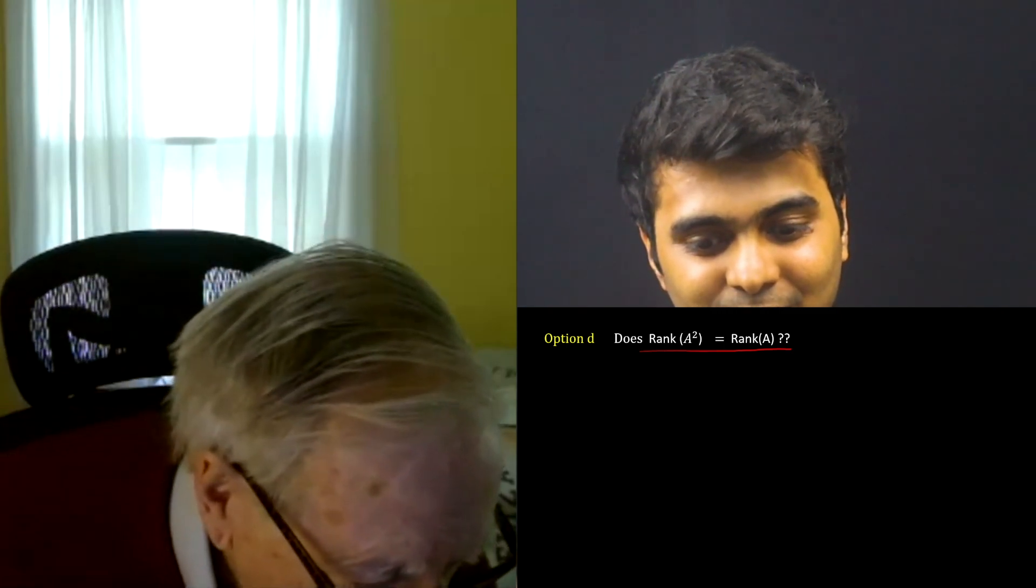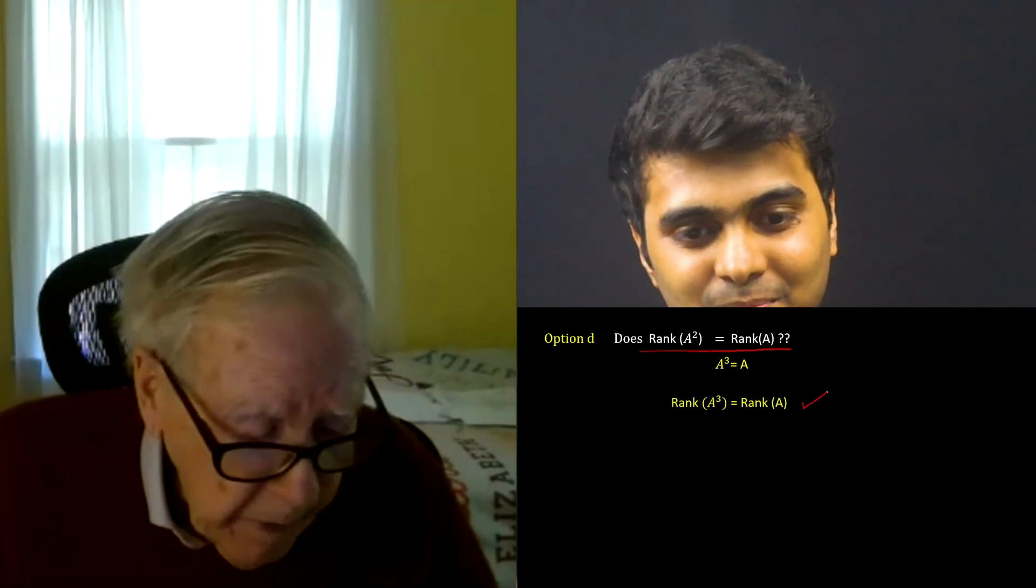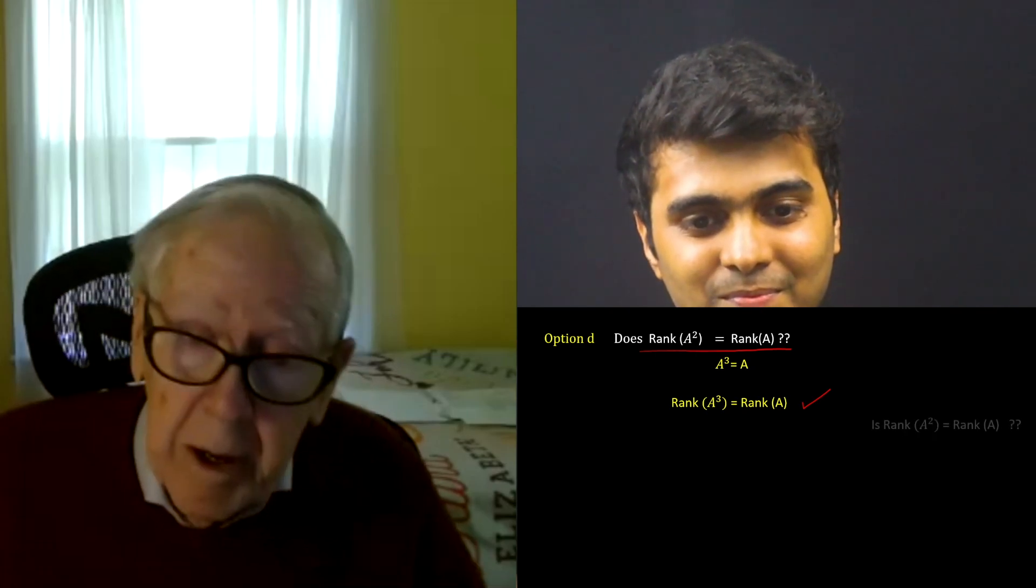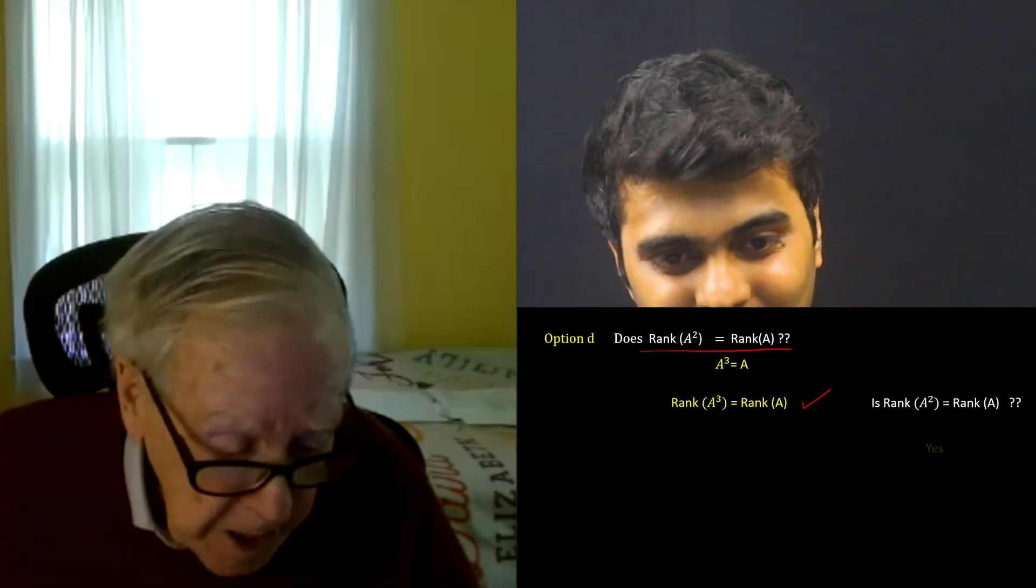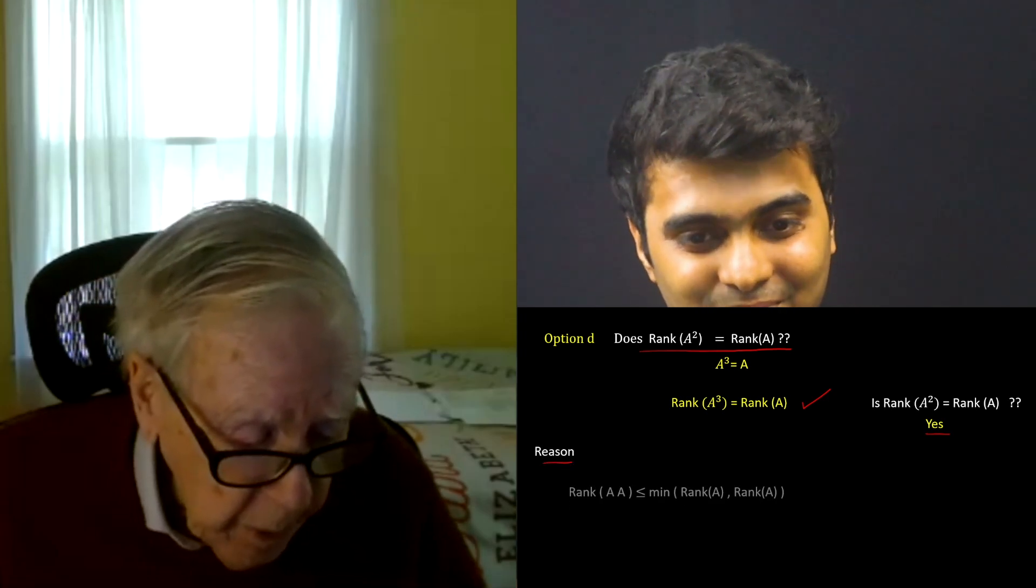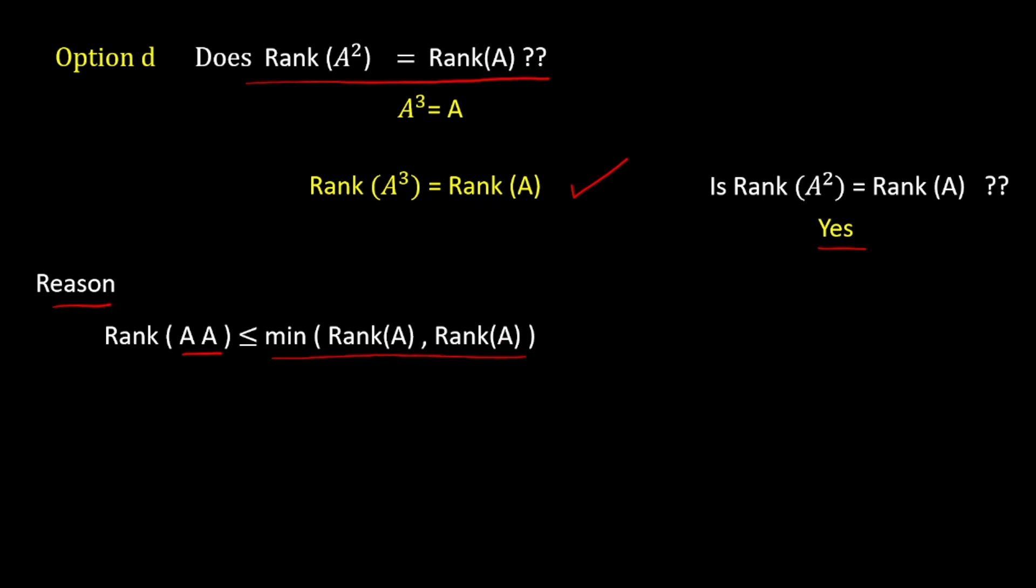If A cubed equals A, does that tell us that A - that certainly tells us that A and A cubed have the same rank. Does A squared have that same rank? Yes, it does, because A squared, the rank of A squared might equal the rank of A or smaller, couldn't be larger. The rank can't grow when you multiply.